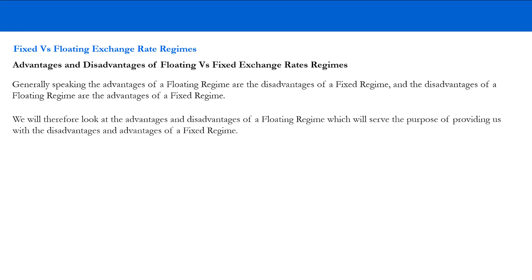Looking at the Bretton Woods system and its collapse has given us a decent understanding of the differences between fixed or pegged and floating exchange rate regimes. But what are the advantages and disadvantages of these regimes? Generally speaking, the advantages of a floating regime are the actual disadvantages of a fixed regime and vice versa. So we'll look at the advantages and disadvantages of a floating regime, which will also serve to provide us with the disadvantages and advantages of a fixed regime.